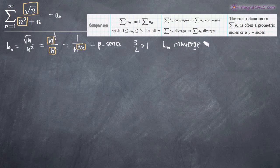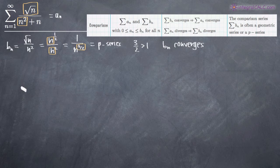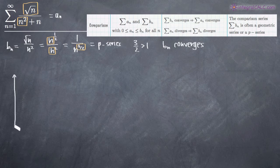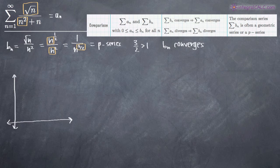We know that b sub n converges. When using the comparison test, we need to know whether b sub n is smaller or larger than a sub n. Let's think about it in terms of a graph. Say a sub n is in orange and b sub n is in green. We've already determined that b sub n converges — it's going to come down toward the x-axis and converge to zero.